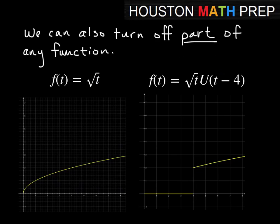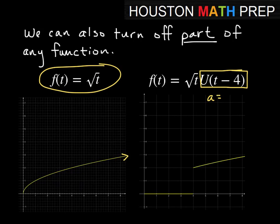We can also use the unit step function to turn off part of any function we like. Here I just used a basic example of the square root function, so we have f(t) equals square root t. And you can take the unit step function here, so I've just chosen this unit step function with a equal to 4.